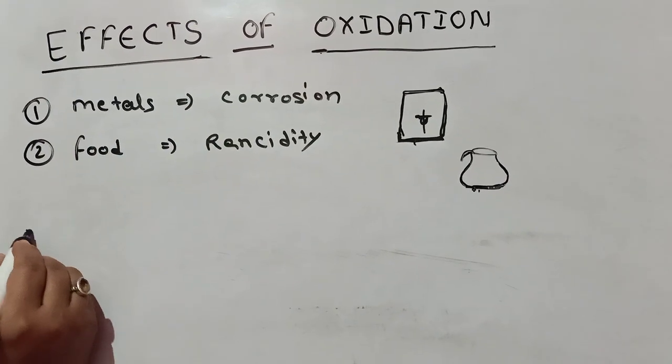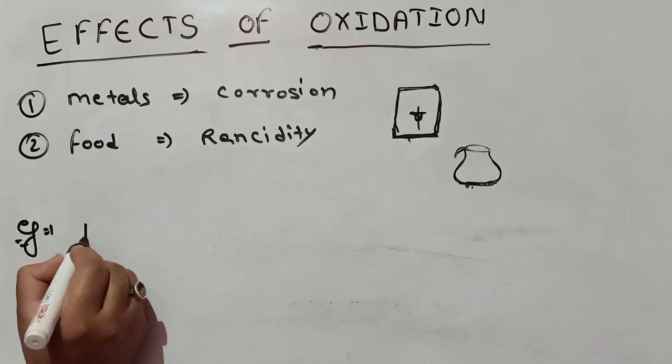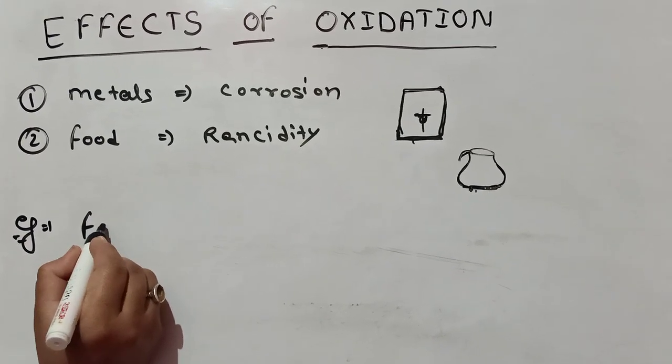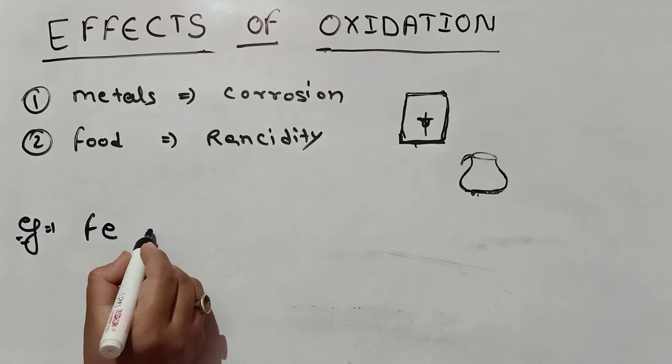If we look at corrosion in metal, we will see an example. The layer of corrosion is called rusting. So, what happens in iron?